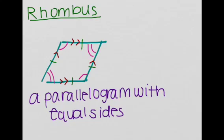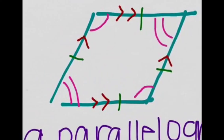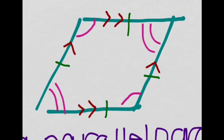The rhombus is a parallelogram, but instead of equal angles, it has equal sides. It has the same properties as the parallelogram — the opposite angles are congruent to each other, this side is parallel to this side, and this side is parallel to this side. But realize all four sides are congruent to each other — this side is equal to this side, which is equal to this side, which is equal to this side.